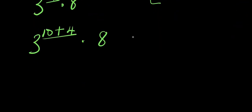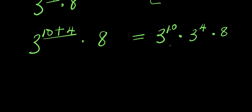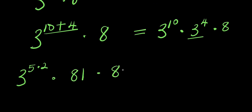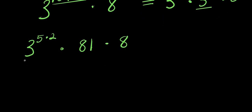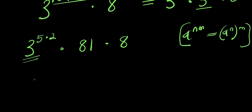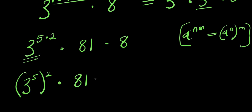We need to find the value of three to the power fourteen. We split the exponent: fourteen equals ten plus four. So three to the power fourteen equals three to the power ten times three to the power four. Three to the power four is eighty-one. So we have three to the power ten times eighty-one times eight.